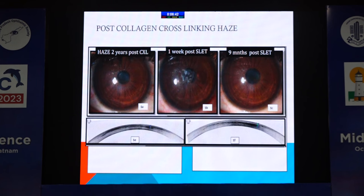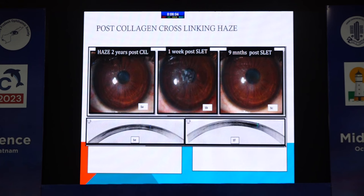He had persistent epithelial erosions and a very low Schirmer score of 8 mm at 5 minutes. We prescribed topical PEG-PPG substitutes, and over three months the erosions resolved. After one year of observation and non-resolution of the scar, we performed a simple limbal epithelial transplant, which reduces scar density. Post-procedure over nine months, the scar density reduced and he was now 6/18 unaided. On AS-OCT, there was reduction in hyper-reflectivity and some increase in pachymetry.